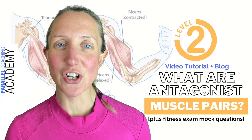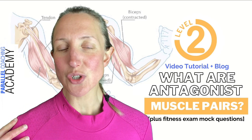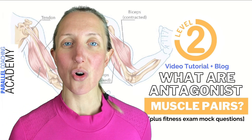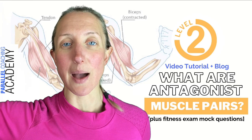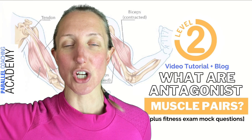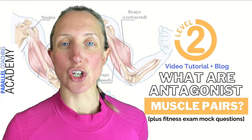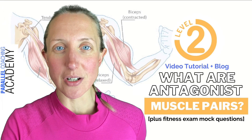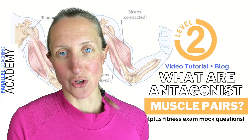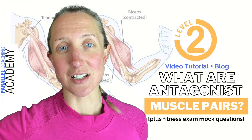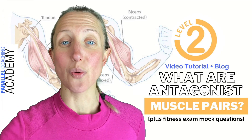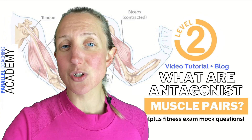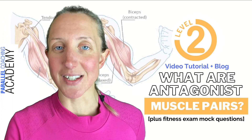Now let's look at the shoulder. The deltoid performs abduction, bringing your arm up into a capital T position — abduction of the shoulder. The opposing action is adduction of the shoulder, which means it's going to work the latissimus dorsi. So latissimus dorsi and the deltoids work in opposition.